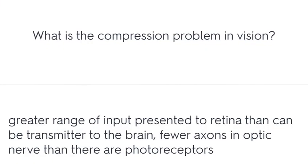What is the compression problem in vision? There is a greater range of input presented to the retina than can be transmitted to the brain. There are fewer axons in the optic nerve than there are photoreceptors.